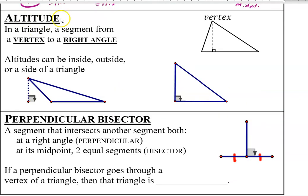Next one for us to talk about is the altitude. Altitude goes from a vertex to a right angle. So anytime you have an altitude, you know instantly you've got a right angle or a 90 degree angle, if we want to think about it in terms of angle measurements.